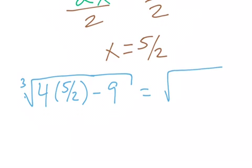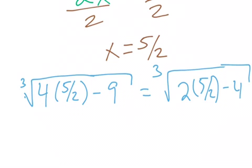So, compare that to the cube root of 2 times 5 over 2 minus 4 and see what happens.